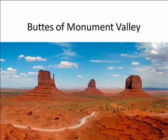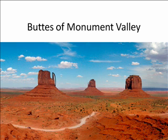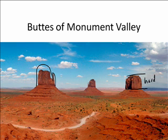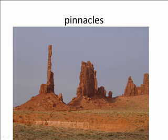The buttes of Monument Valley are some of the most photographed and beautiful buttes in the world. These are called the mittens because it looks like they've got bumps. Very often a butte will be left behind as a hard, resistant layer of rock is protecting the softer rock below it. Finally, you can have such a thin piece of a butte left behind that you have a pinnacle.